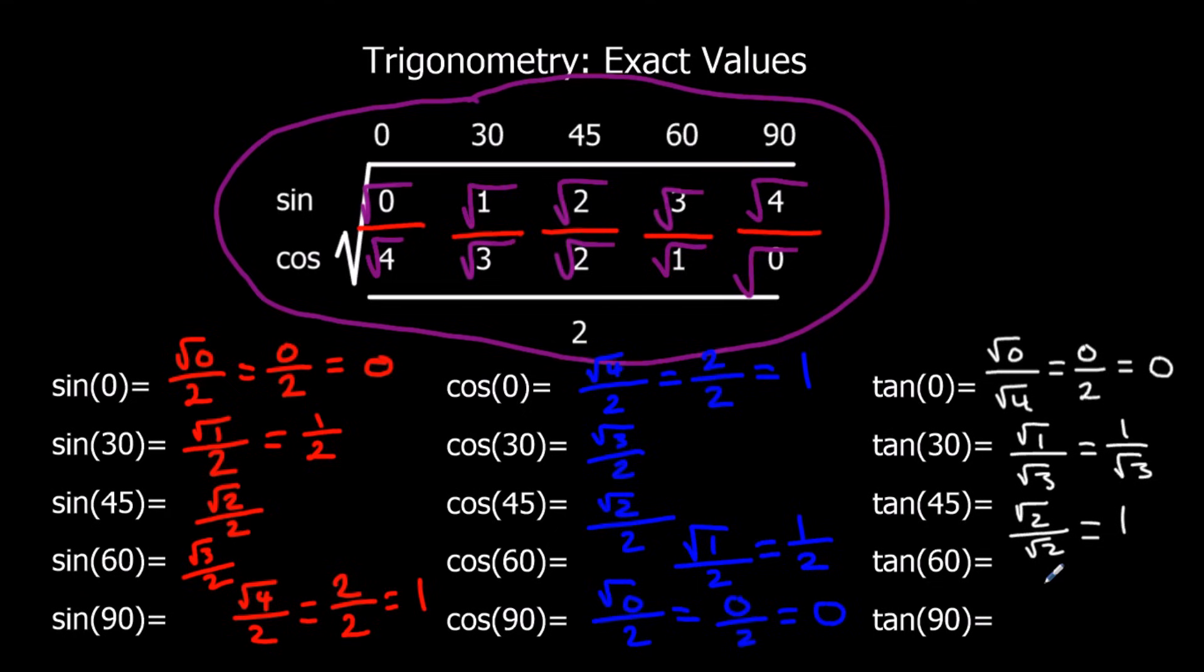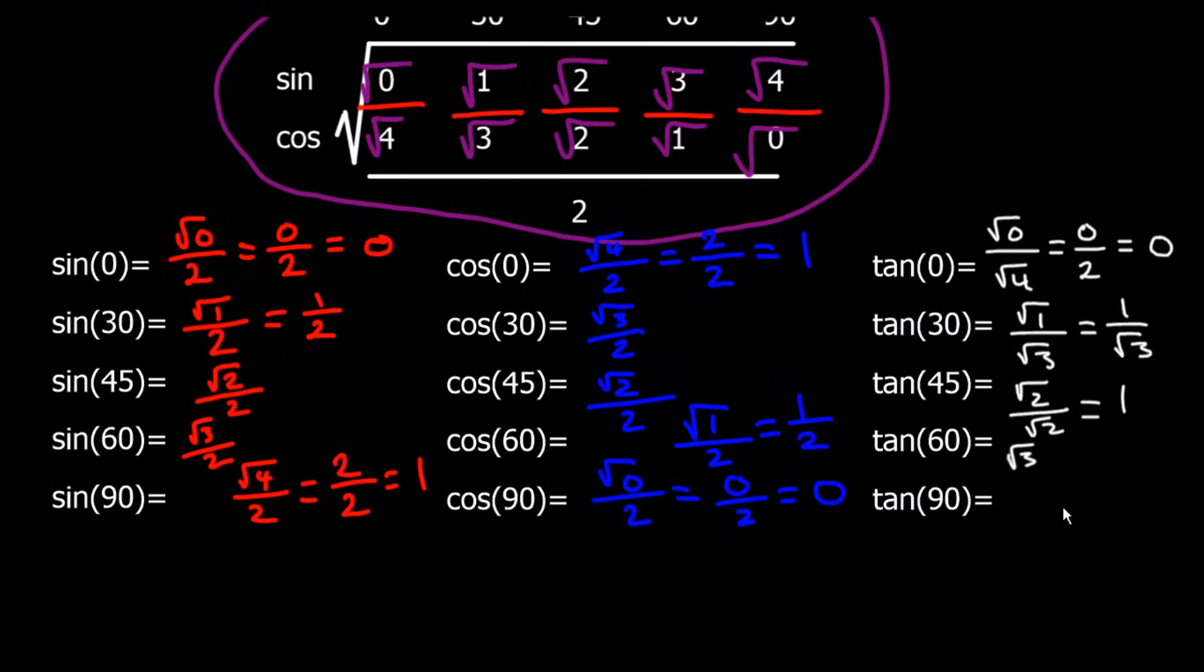Tan 60 is root 3 over root 1. That's root 3 over 1, which is root 3. And tan 90 is root 4 over root 0, which is 2 divided by 0.